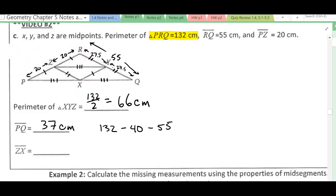And then for ZX, this side over here, it's going to be half of this side over here, which we calculated already, which is going to be 27.5 centimeters.